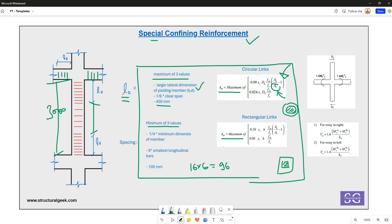What exactly is the fundamental reason for providing the lesser spacing? In a moment frame, we are letting the ends of columns and beams yield or go into the nonlinear zone so that they can dissipate energy in time of earthquake.